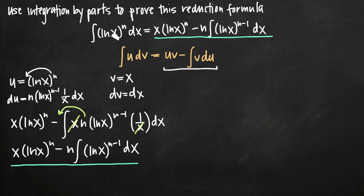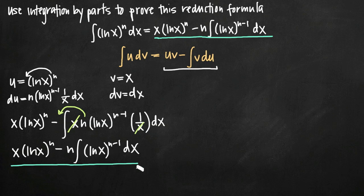That's how we use integration by parts to prove this reduction formula. Now if you ever get this integral in exactly this form — ln of x raised to a constant — instead of going through the full integration by parts process of finding u, dv, du, and v, you could just use this reduction formula to go directly to this step and skip the integration by parts process. That's why we use reduction formulas, and that's how you can use integration by parts to prove this formula.